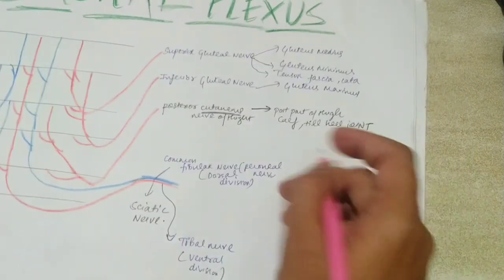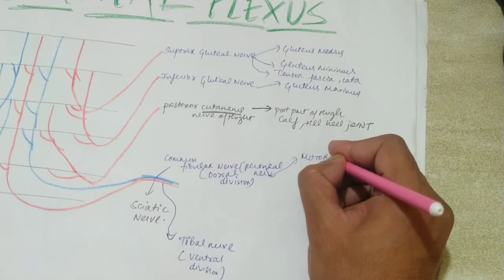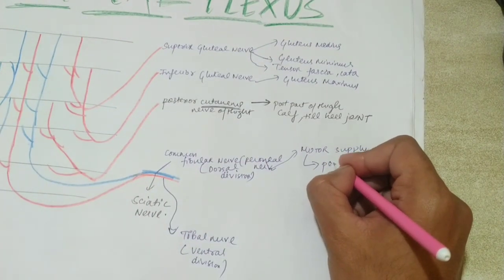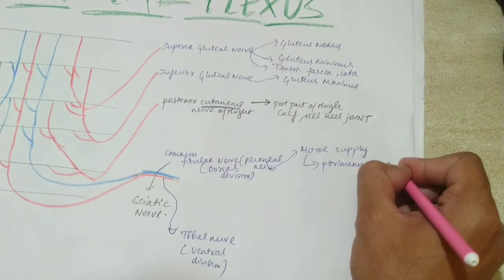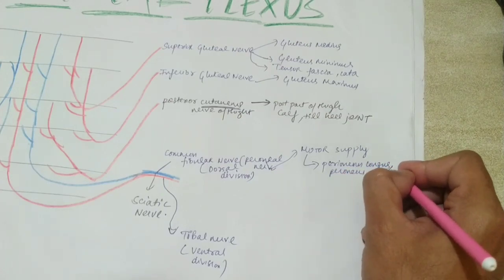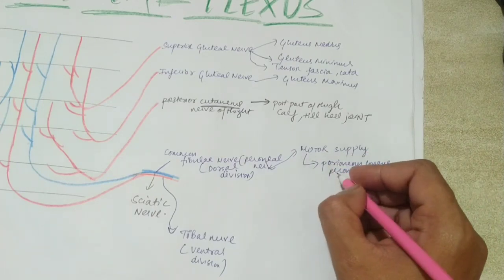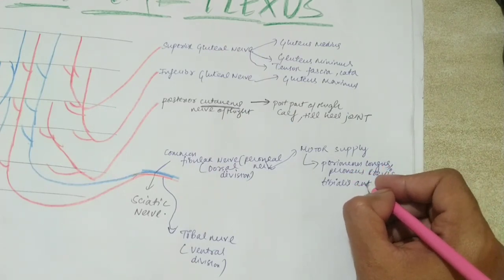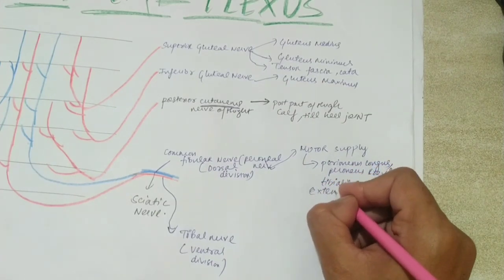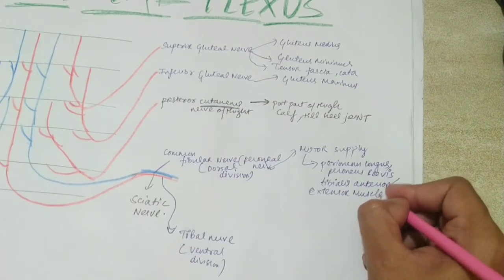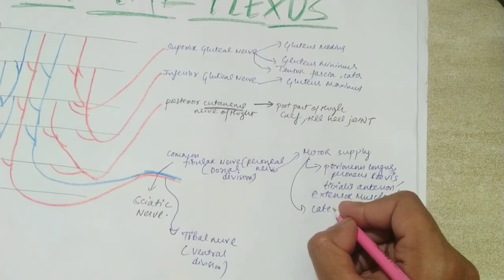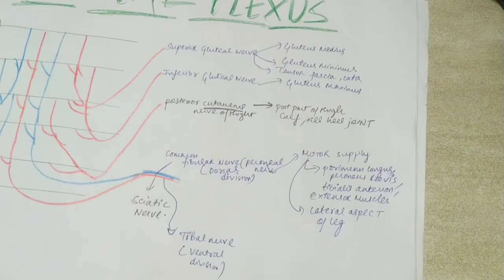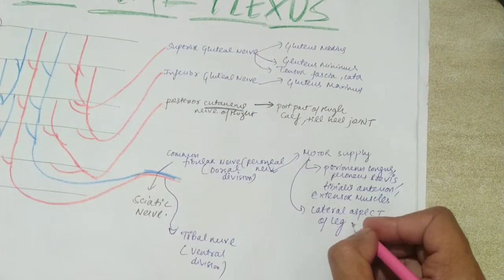The common fibular nerve provides motor supply to the lateral leg muscles — peroneus longus and peroneus brevis — and from the anterior side it supplies tibialis anterior and the extensor muscles such as extensor digitorum brevis. Its cutaneous supply covers the lateral aspect of the leg below the knee and the lateral foot including the sole.